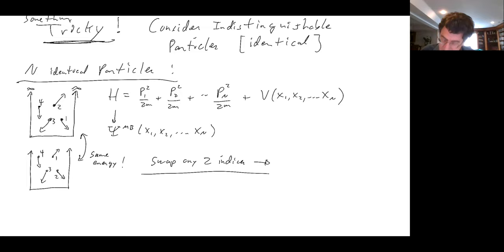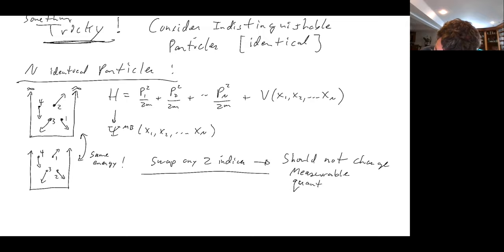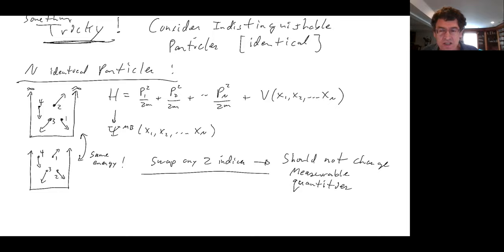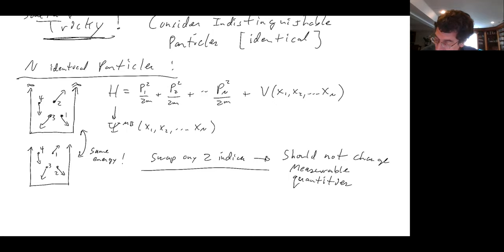Swapping indices should not change measurable quantities. It should not change things because if I have an atom with four electrons and I call them electron one, two, three, and four — if I just change the names of the electrons, it doesn't change the physics. There might be a phase somewhere, but nothing measurable should change. I hope that's sort of obvious to you.